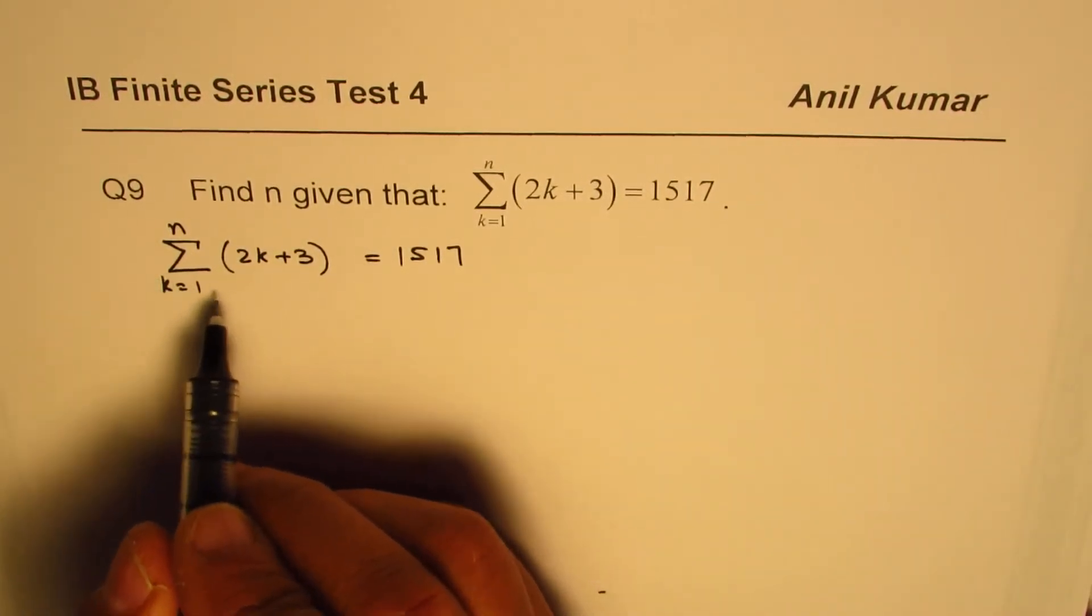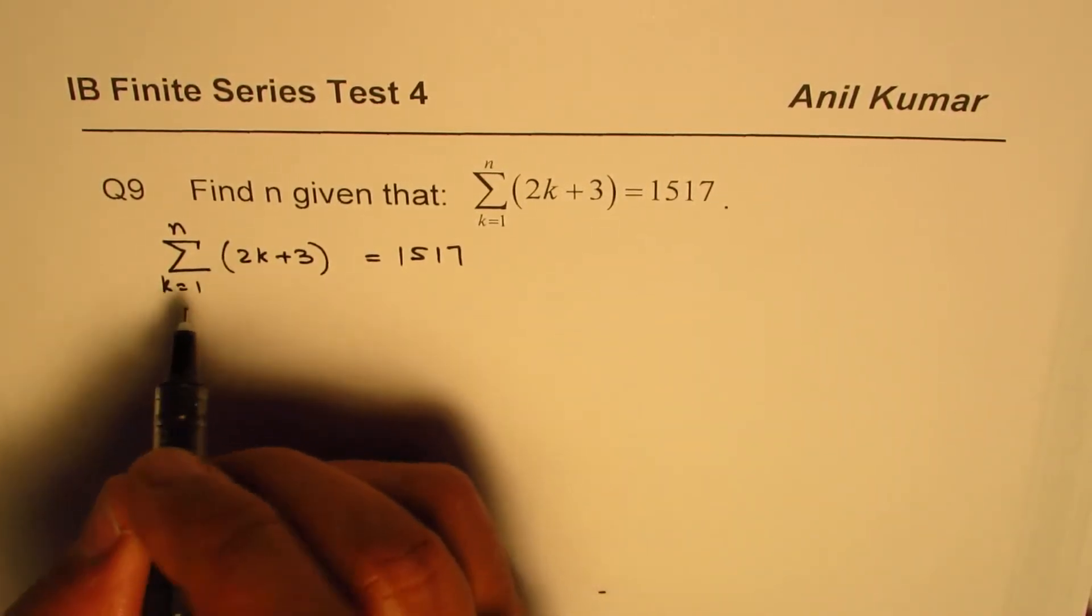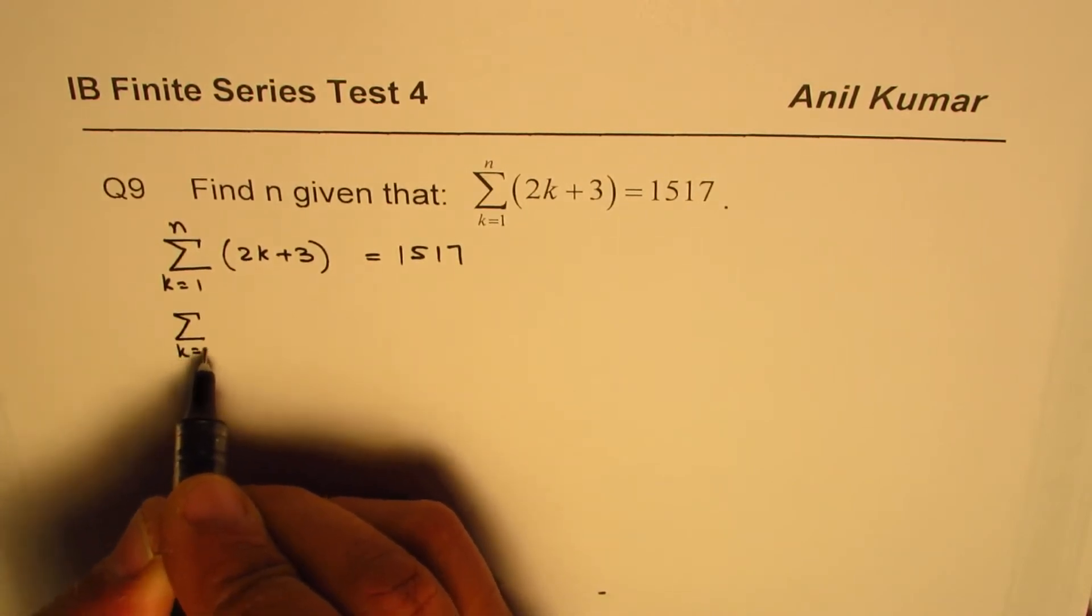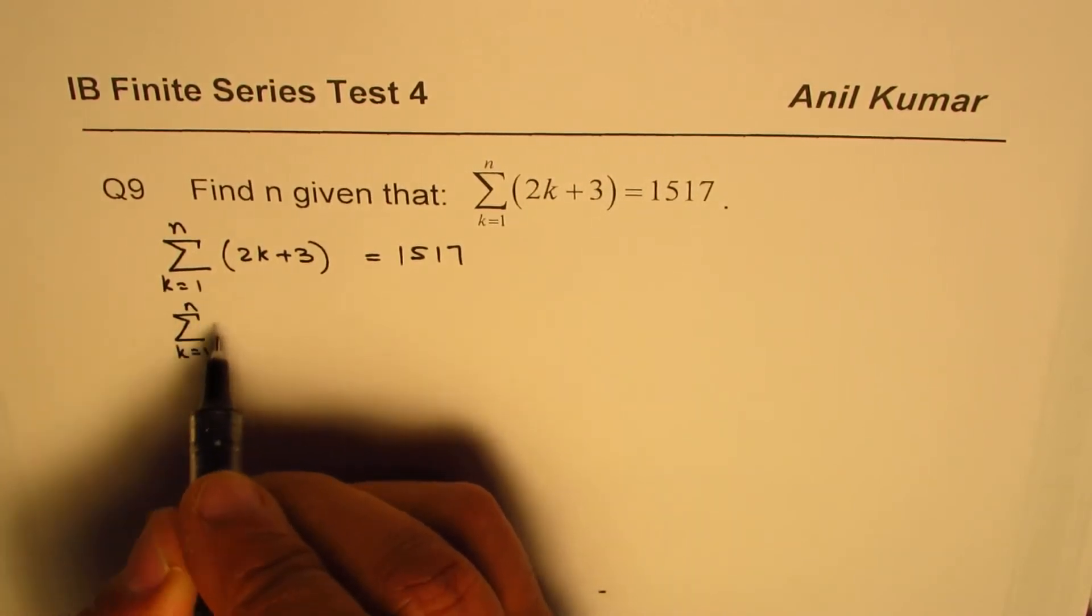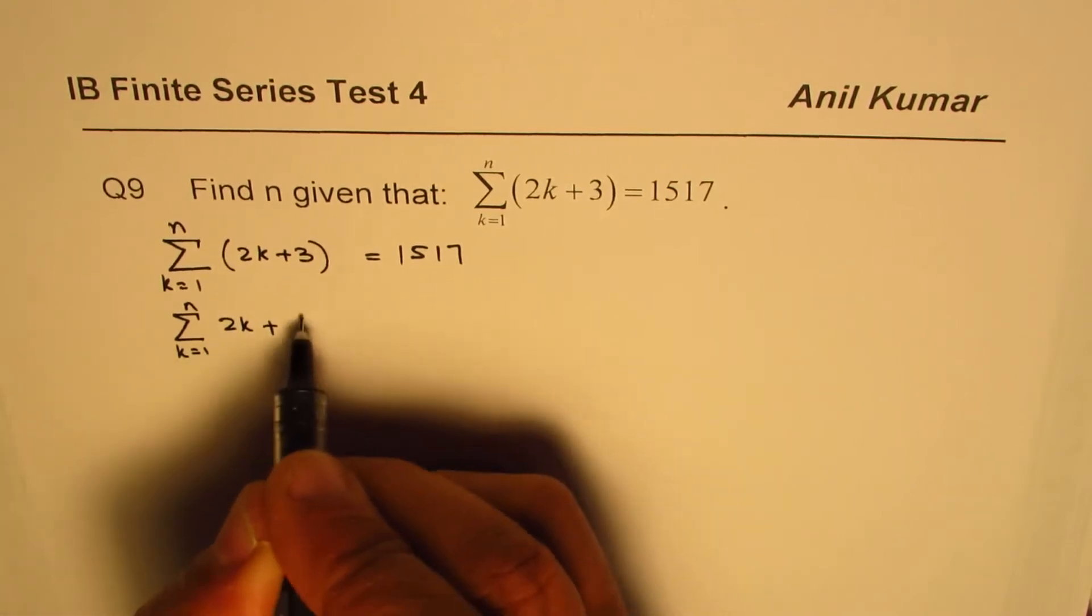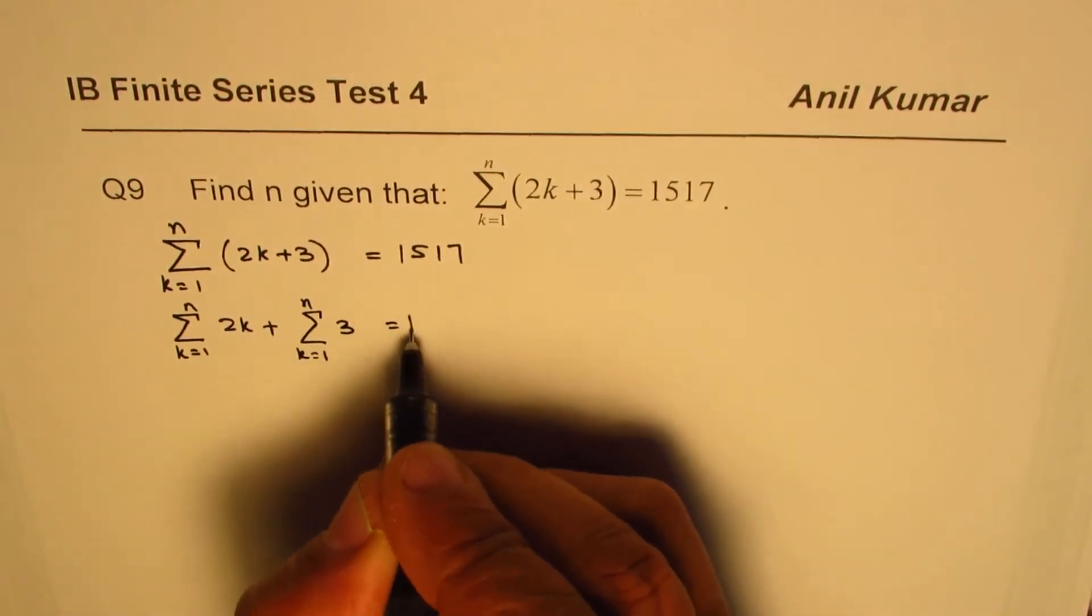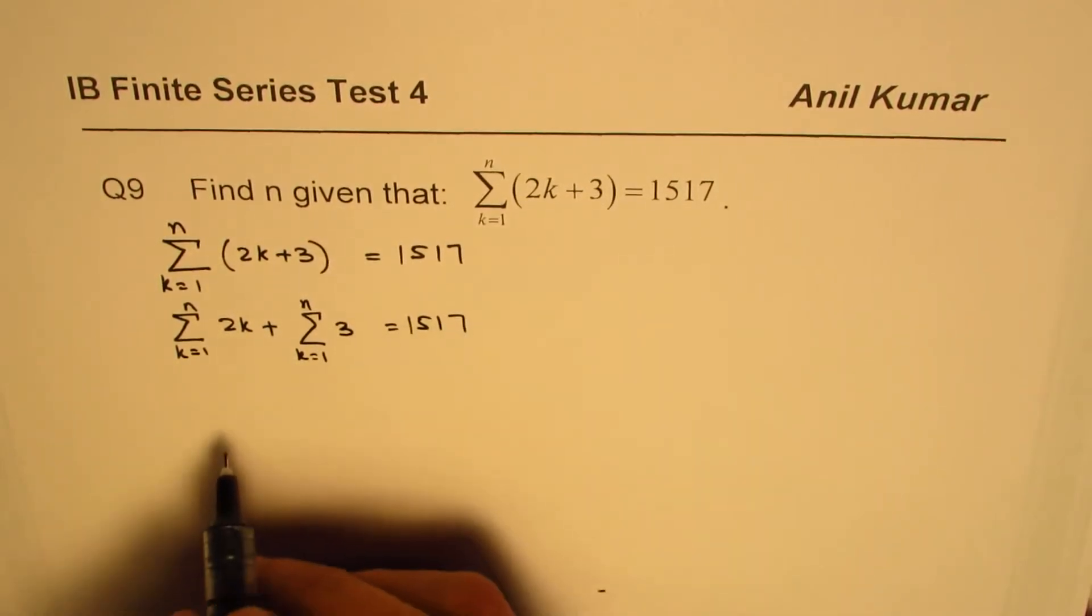So we'll apply the laws or rules of summation. That could be written as sum when k equals from 1 to n for 2k plus the sum k equals 1 to n for 3. That should be equals to 1517.